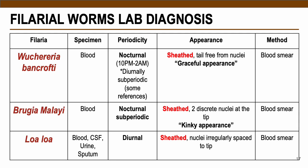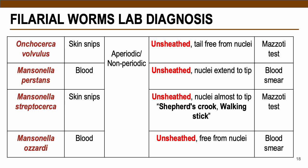Also appearing on the board exam is the appearance of the nuclei — kindly take note of all descriptions present in your handout. For the unsheathed ones, we have Onchocerca volvulus and the three Mansonella species. All of these are unsheathed in their microfilaria.